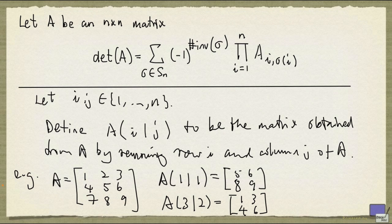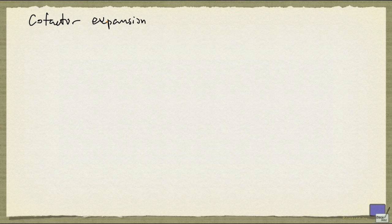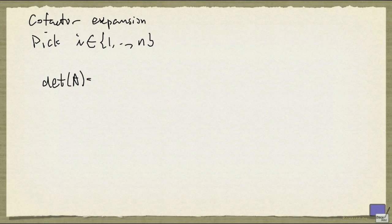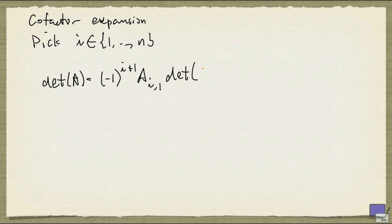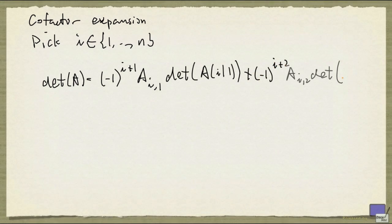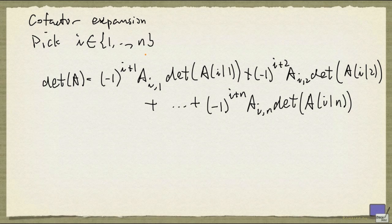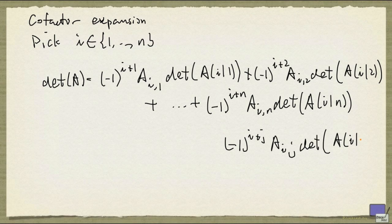So now with this defined, we can look at the cofactor formula for determinants. We first pick an i from 1 up to n, and then the determinant of A is given by the following. It's a sum of n terms. The jth term looks like this: (-1)^(i+j) times A_ij times the determinant of A(i|j).